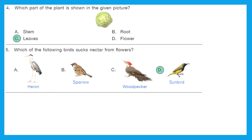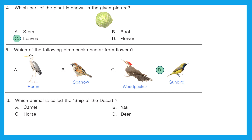Question 6: Which animal is called the ship of the desert? I think it is a very easy one — can you guess which animal out of these we find in the desert? The answer is the camel.